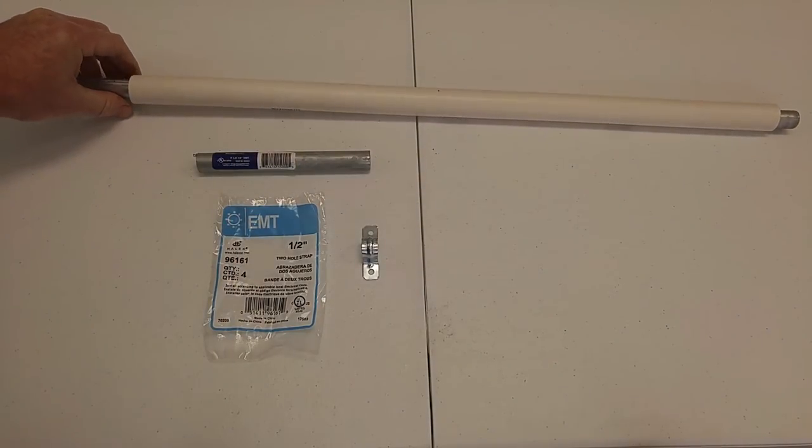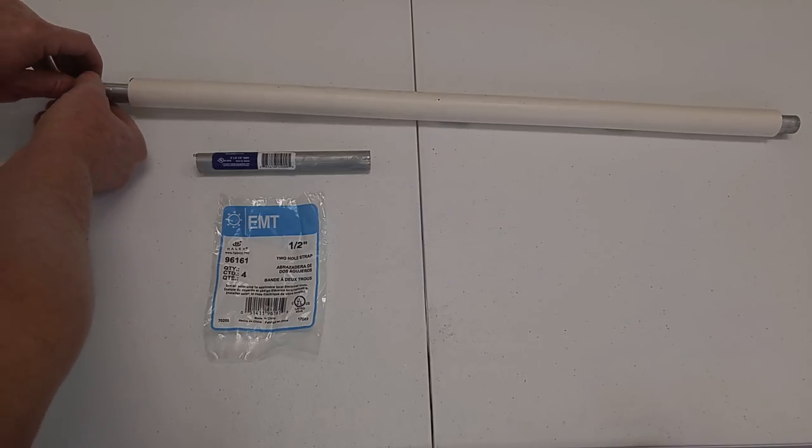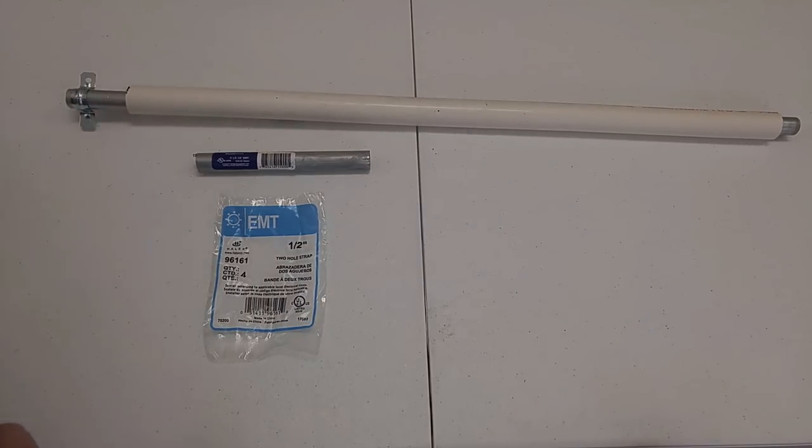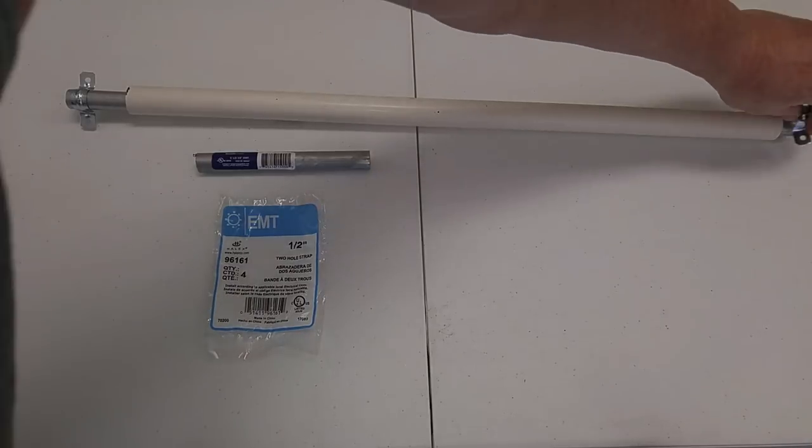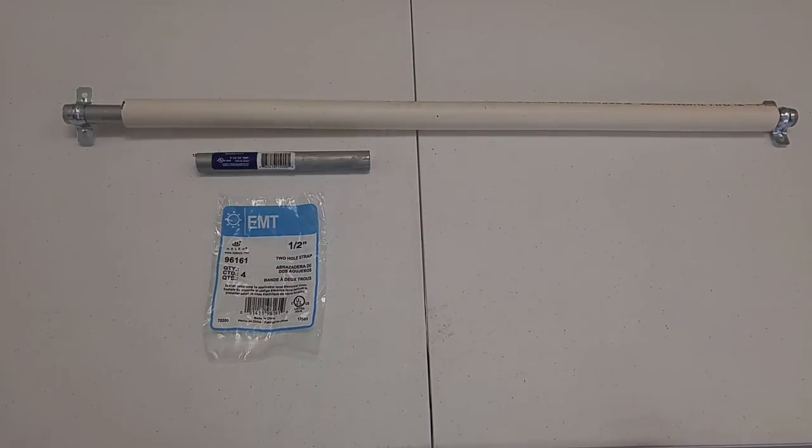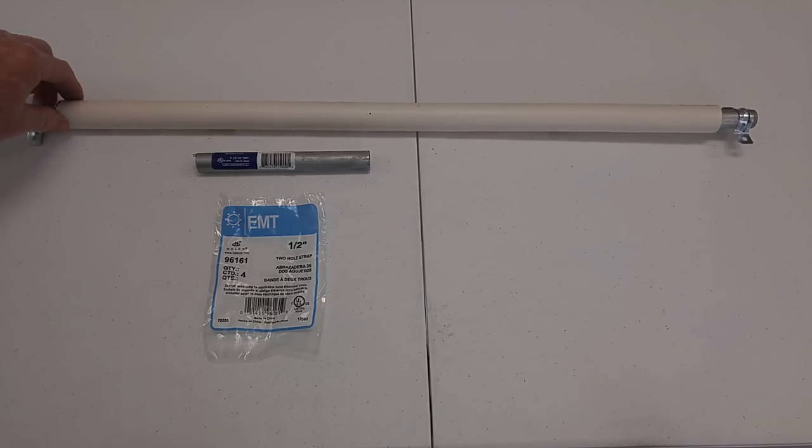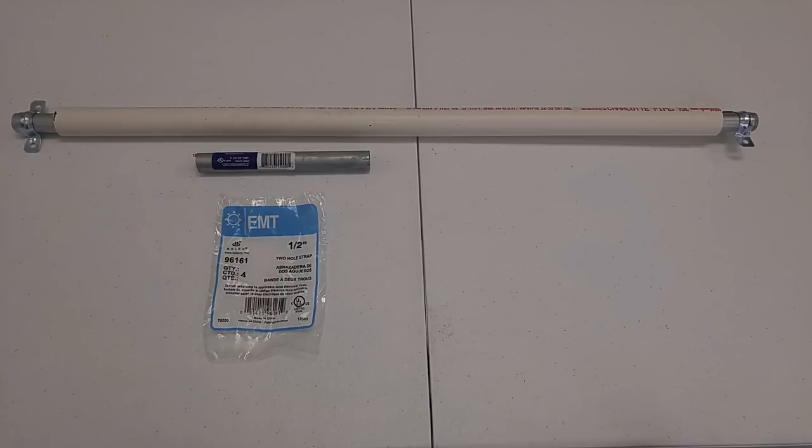To hold the roller in place you put one of these straps on either end like this and you attach them to your 2x4. When you attach it to the 2x4 I'll show you, you want to leave a little bit of a gap between the edge of the PVC pipe and the 2x4 to make sure that it rolls.